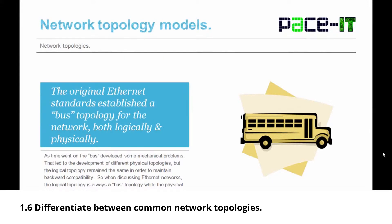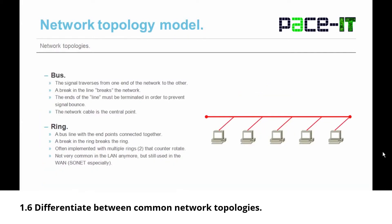Let's move on to some common network topology models. The first is the bus. The original Ethernet standard established a bus topology both logically and physically. In a bus topology, the signal traveled along a predetermined path from end to end — from one direction to the other and back. Over time the bus developed mechanical problems, leading to different physical topologies, but the logical topology remained the same for backward compatibility. On Ethernet networks, the logical topology is always a bus.